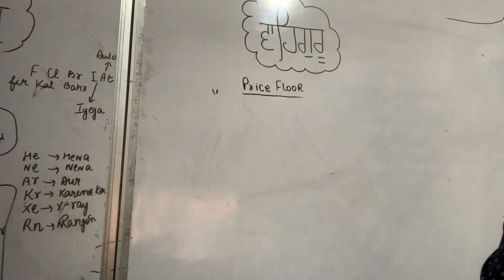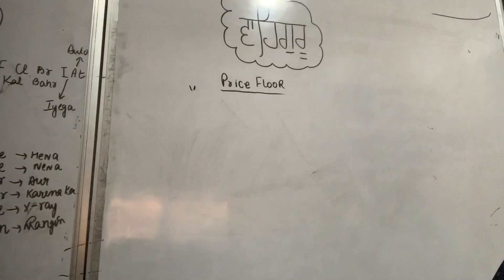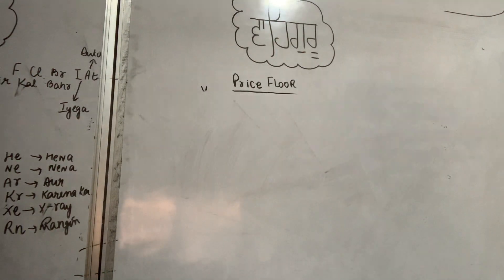Ikunkar, Satnam, Kartapurakh, Nirpau, Nirvair, Akaal Murat, Ajuni, Sayabh Bhang, Gurpar Saad, Japp, Aad Satch, Jugaad Satch, Haibi Satch, Nanakhosi Bhi Satch. Vahegu Ji Ka Khalsa, Vahegu Ji Ki Fateh.